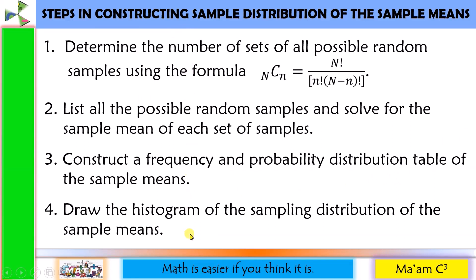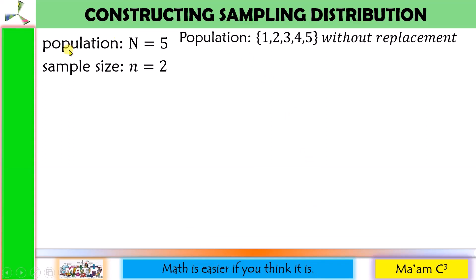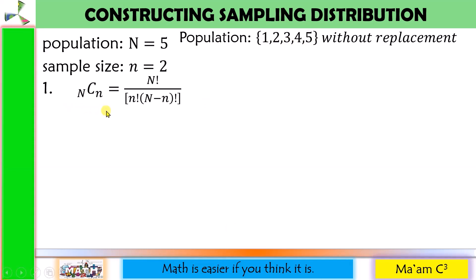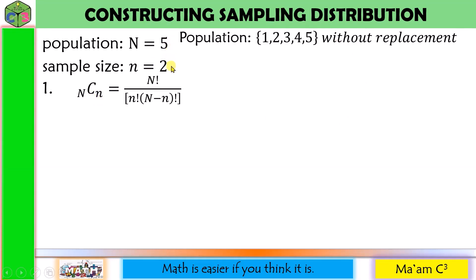Here are the steps in constructing the sampling distribution of the sample means. We are given a population of size N equal to 5 — that is, 1, 2, 3, 4, 5 — and a sample size of n equal to 2. Step 1: determine the number of sets of all possible random samples using the combination formula — N taken n at a time, without replacement. Our capital N is 5 and small n is 2. Let us substitute those values.